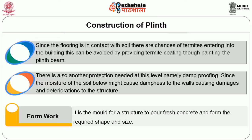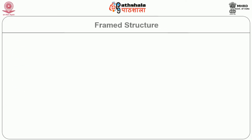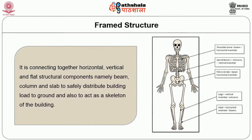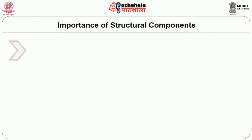Formwork is the mold for the structure to pour fresh concrete and form the required shape and size. Level 3 includes the framed structure. It is the connecting together of horizontal, vertical and flat structural components — namely beam, column and slab — to safely distribute the building load to the ground and also to act as the skeleton of the building.